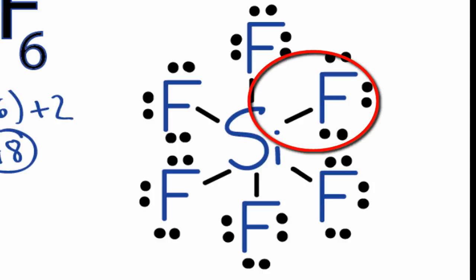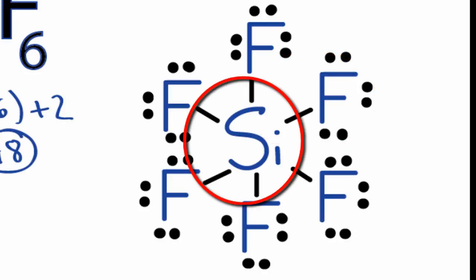So each of the fluorines has an octet. And the silicon in the center, it has more than 8 valence electrons. But that's okay, because it's below period 2, row 2 on the periodic table, and it can have an expanded octet.